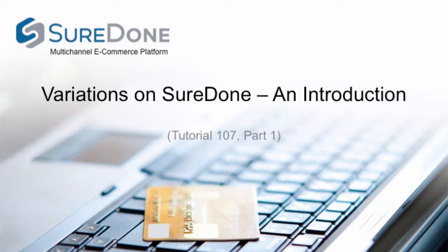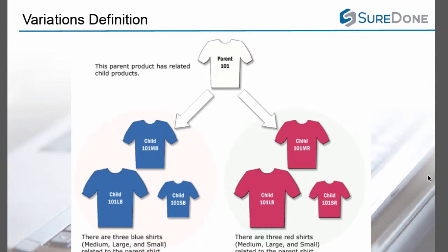Then we will show you how to create variation listings both by single item and using bulk listings. So first and foremost, what is a variation? A variation is a list of connected products that have things in common but vary in small ways. For example, you might be selling men's shirts — this is the example we are going to be working through today. T-shirts come in different sizes, they may come in different colors, and they may also come in different styles.